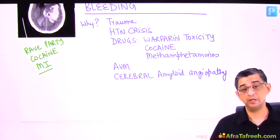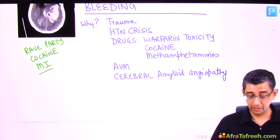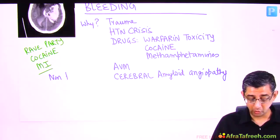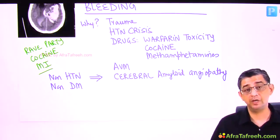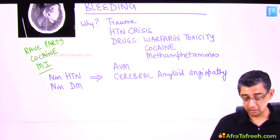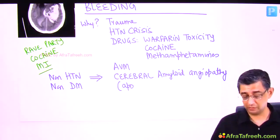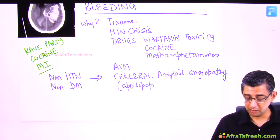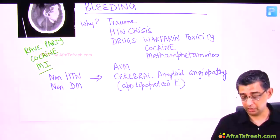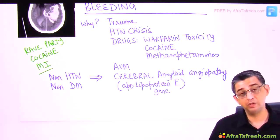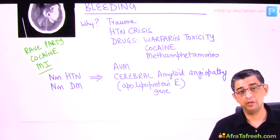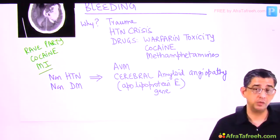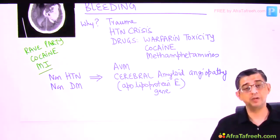So decompressive hemicraniectomy or ventriculostomy should have been considered. The key message: a non-hypertensive, non-diabetic patient developing sudden-onset intra-parenchymal hemorrhage points to CAA. Genetics-wise, apolipoprotein E is involved — it's discussed twice in neurology: once for Alzheimer's disease and once for brain hemorrhage secondary to cerebral amyloid angiopathy.